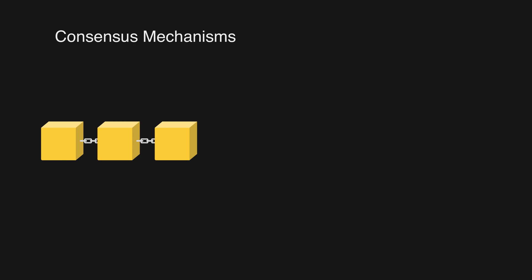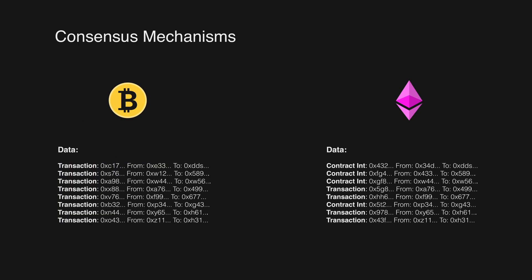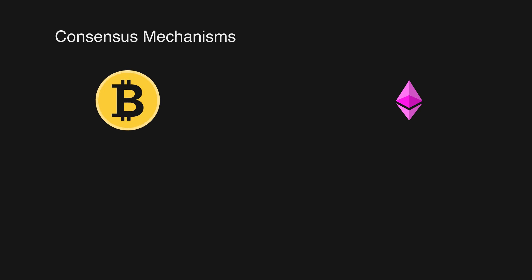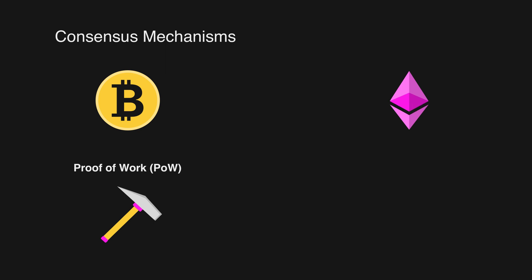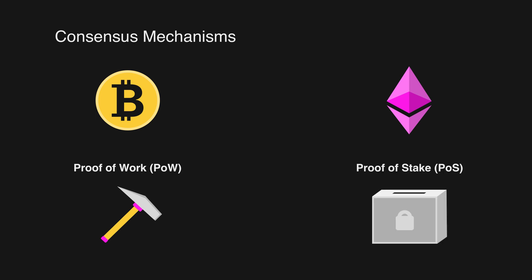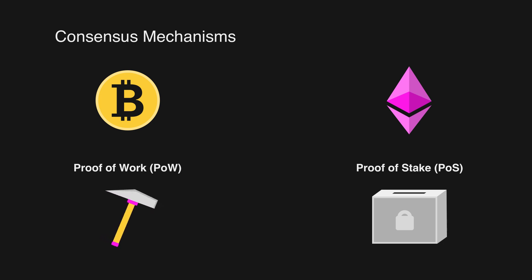Much like how the records of a block can change based on the network you are on, this is the same with consensus. For instance, with the Bitcoin network you get a consensus mechanism called proof of work, POW, and with Ethereum, recently moving over to proof of stake, POS. Proof of work requires nodes — so-called miners — to solve complex mathematical problems in order to validate new transactions and add them to the chain. The first miner to solve this problem gets a reward — a certain amount of coins.